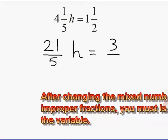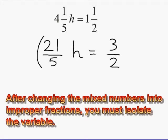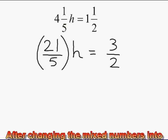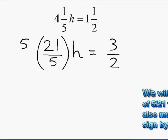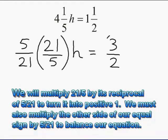Now that we have turned both mixed numbers into improper fractions, we are going to isolate the variable h. To isolate the variable h, we are simply going to multiply 21 over 5 by its reciprocal of 5 over 21. By doing this, this will turn it into positive 1, leaving us with positive 1h on the left-hand side of our equation.